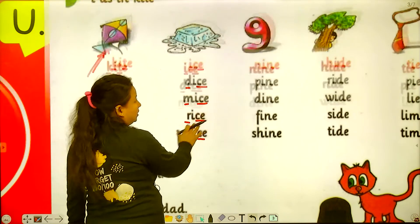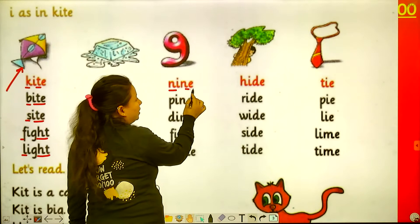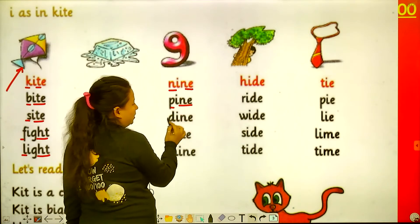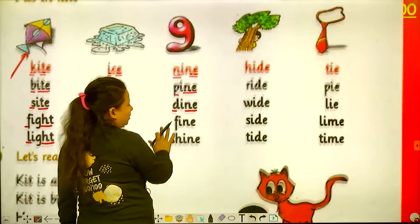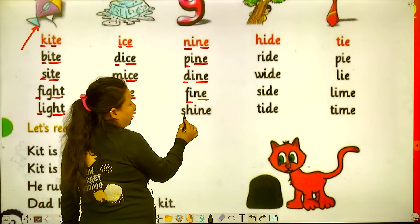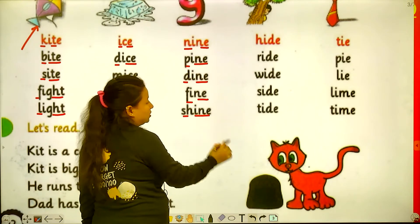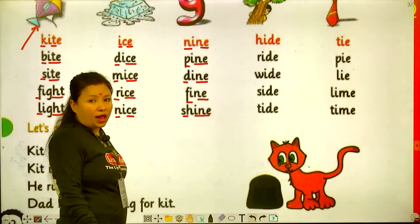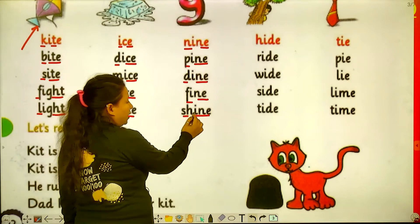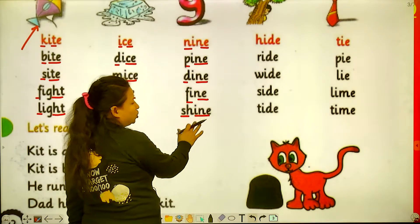Now next: nine, pine, dime, pine, and shine. This is shine — S-H-I-N-E — shine.